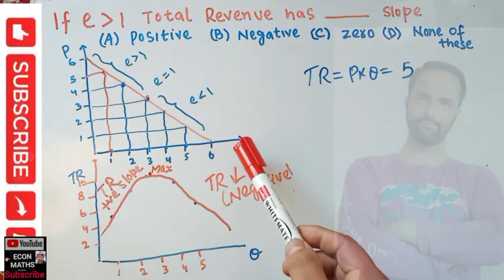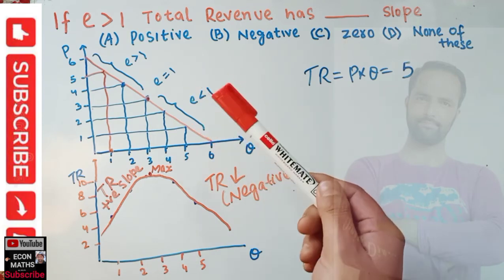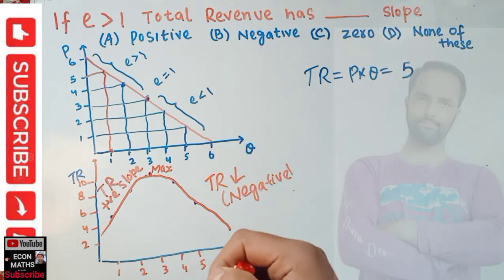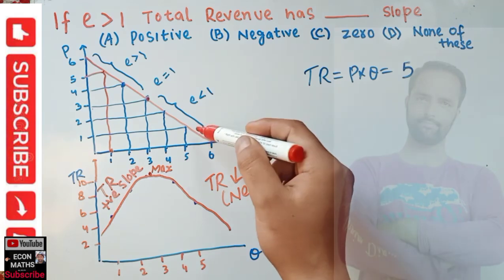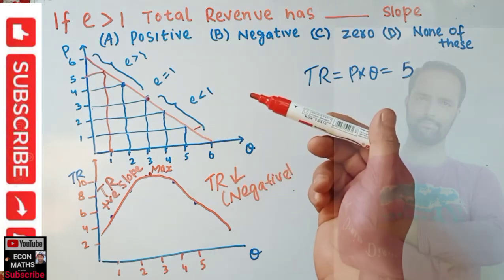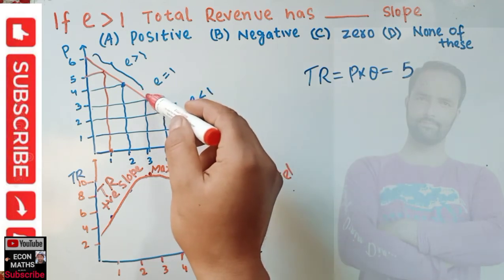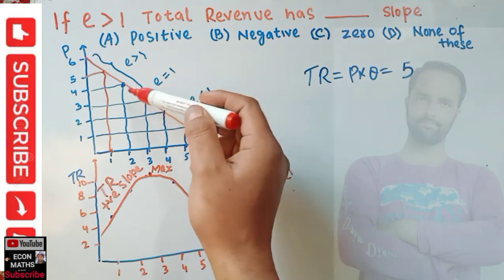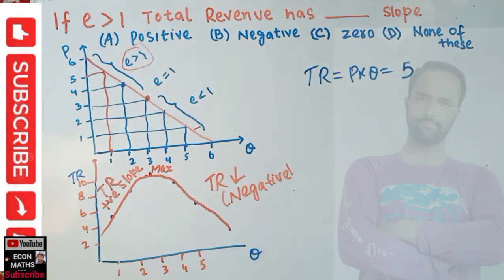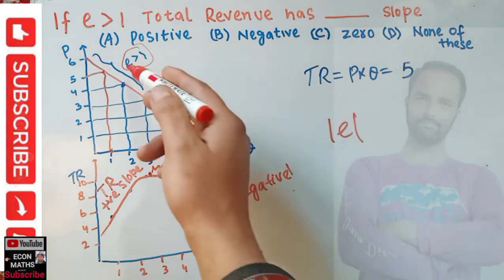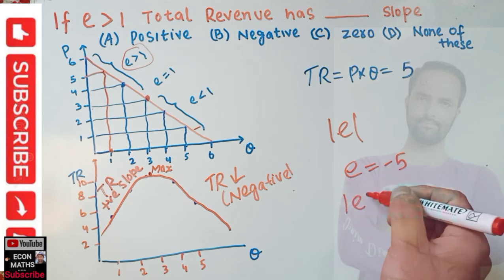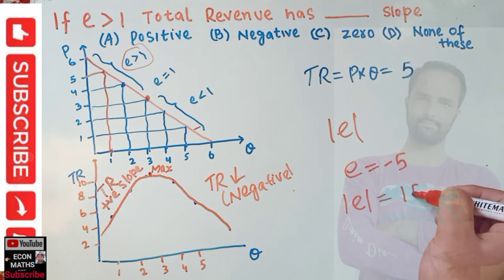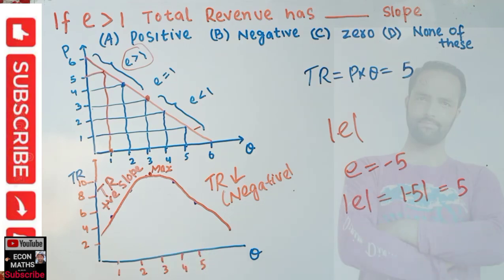If you are wondering how elasticity changes along a linear demand curve, it has been explained in an earlier video. In the upper half segment, elasticity is greater than one — by elasticity we mean the absolute value. Otherwise, we would get a negative value; by taking the absolute value we convert it to a positive number. I hope this video makes that clear. Thank you.